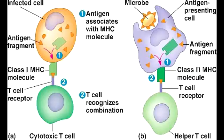How does MHC1 initiate an immune response? Since MHC1 mediates viral immunity, first you will have a cell that is infected by a virus. The antigens in that infected cell will combine with MHC1, forming the MHC1 antigen complex. This complex gets expressed on the surface of the cell, where it is recognized by T-cell receptors and CD8 T-cells, leading to the initiation of the immune response.